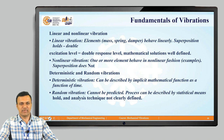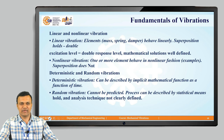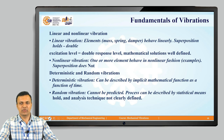Deterministic vibrations are those where the vibration amplitude or frequency can be determined in advance. Random vibrations, also known as non-deterministic vibrations, are those where the amplitude or frequency cannot be predetermined.